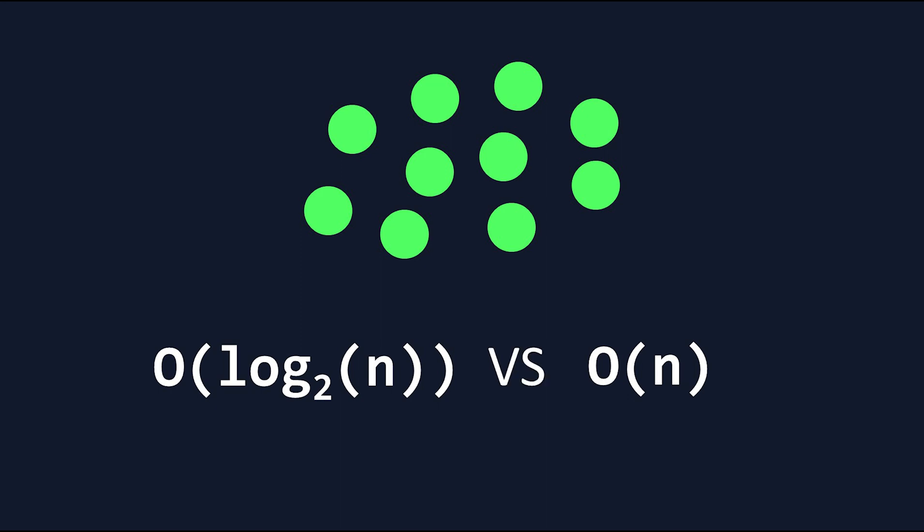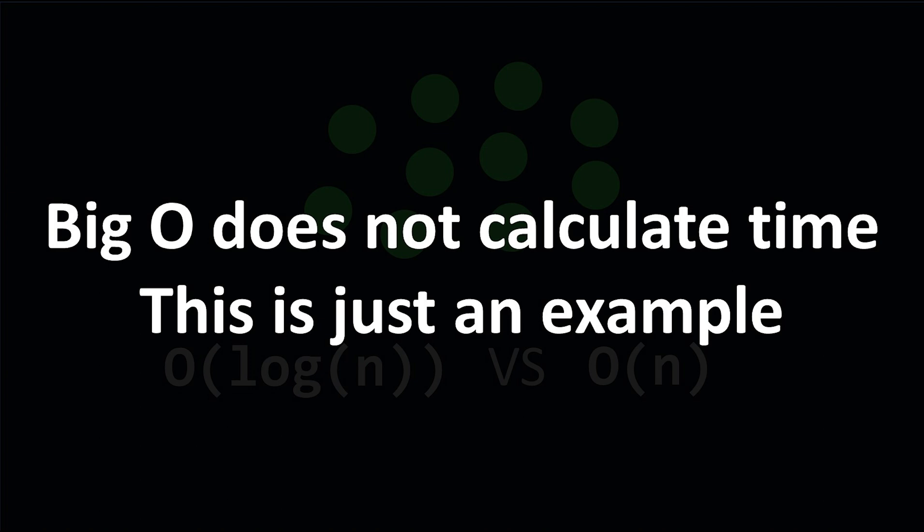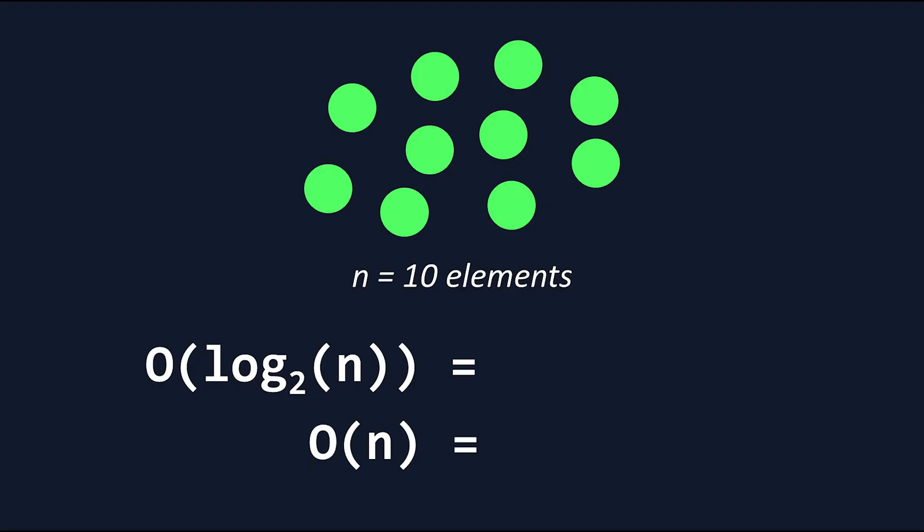Let's compare these two functions, and assume that their output is an estimation of how fast the algorithm runs in milliseconds. We don't actually calculate times in Big O, but it's a helpful example for understanding how to compare different functions.